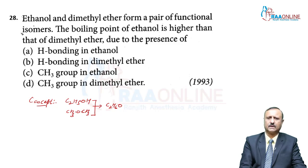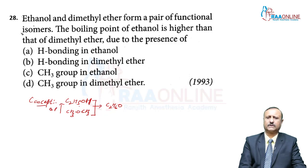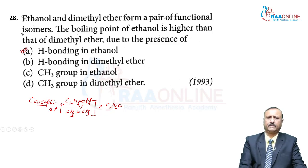Among these functional isomers, the boiling point of ethanol is higher than that of dimethyl ether. Why? Ethanol forms hydrogen bonding with water molecules as well as with another molecule of ethanol itself. The answer is option A: hydrogen bonding in ethanol.